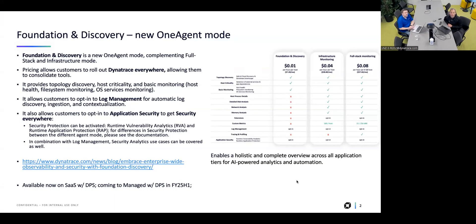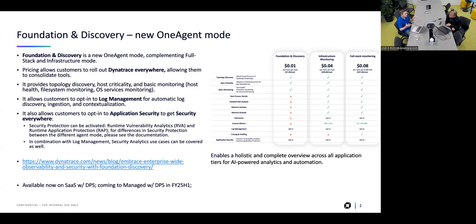One of the first things we announced at Perform was a new OneAgent mode called Foundation and Discovery. The focus here is around deploying OneAgent to all of your hosts across your entire enterprise. Customers know and love OneAgent — they use it on all their tier one and tier two applications, their critical infrastructure. But many times it proved too expensive to put on tier three and tier four applications. Foundation Discovery is a much more economical mode that allows customers to deploy across their entire enterprise, eliminating monitoring gaps.